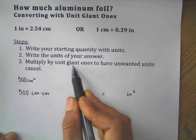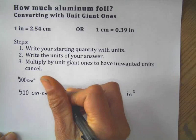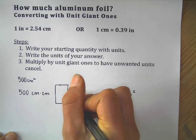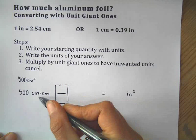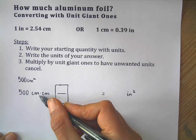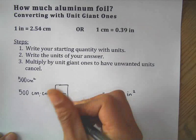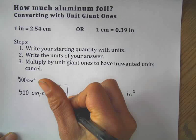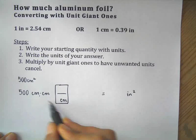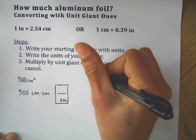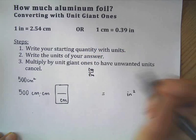Then I'm going to multiply my quantity, my original quantity, by unit giant ones. And I'm going to set it up in such a way that my unwanted units, my centimeters, cancel out and I introduce in my inches. So what I can do is I can set this up and say centimeters on top of centimeters, this would be, centimeters on top of centimeters will cancel out. That will be the equivalent of 1.